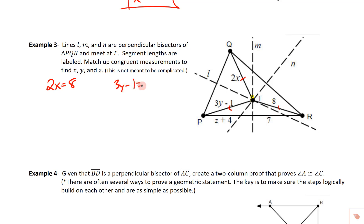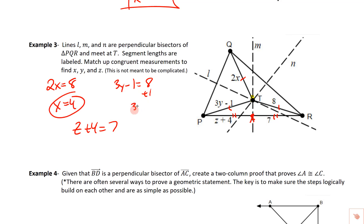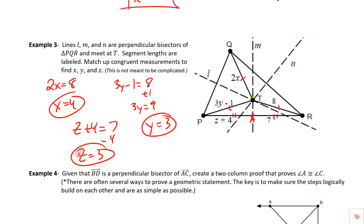Since these are perpendicular bisectors, a point A on segment PR means PA equals AR, so Z plus 4 equals 7. Solving each equation: from 2X equals 8 we get X equals 4; adding 1 to 3Y minus 1 equals 8 gives 3Y equals 9, so Y equals 3; and subtracting 4 from Z plus 4 equals 7 gives Z equals 3. We get all three variables from the perpendicular bisector theorem.